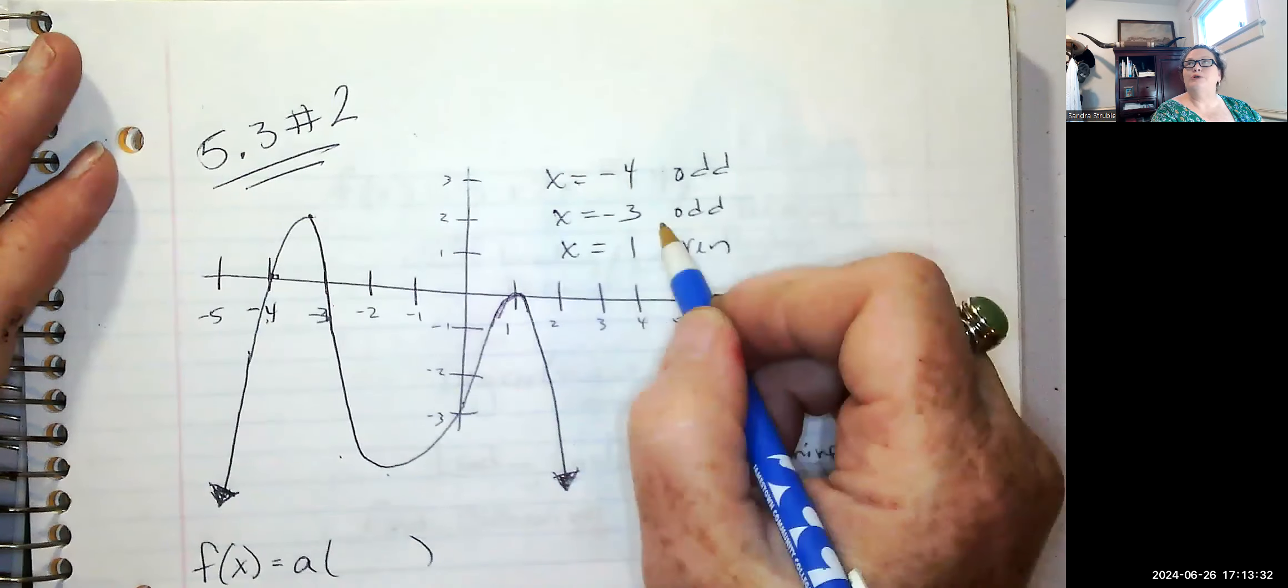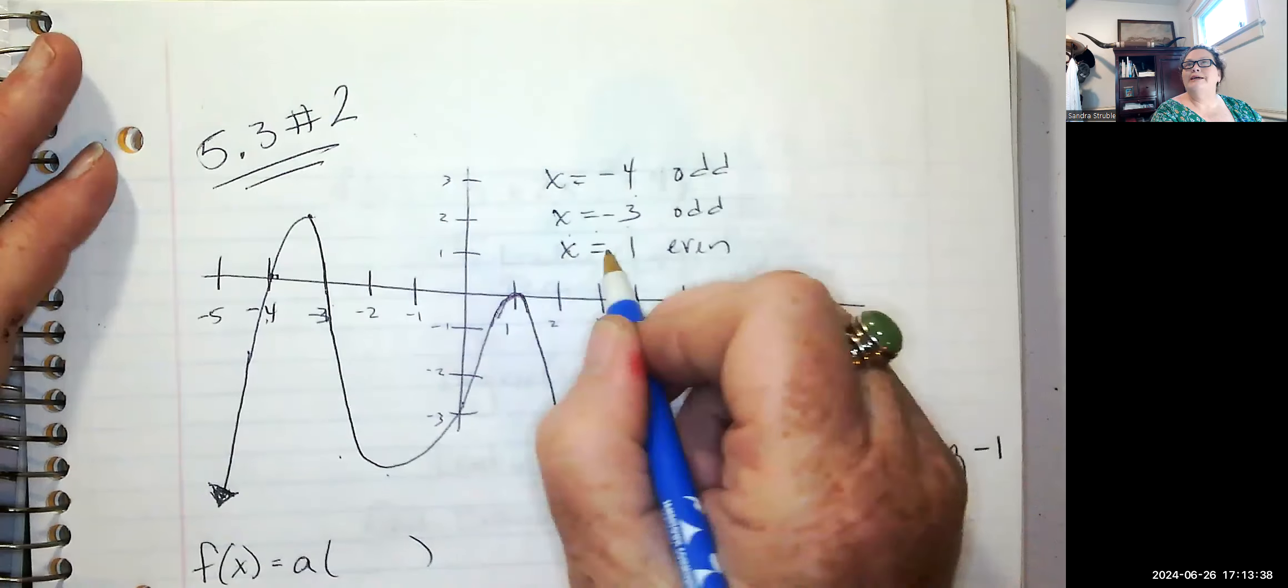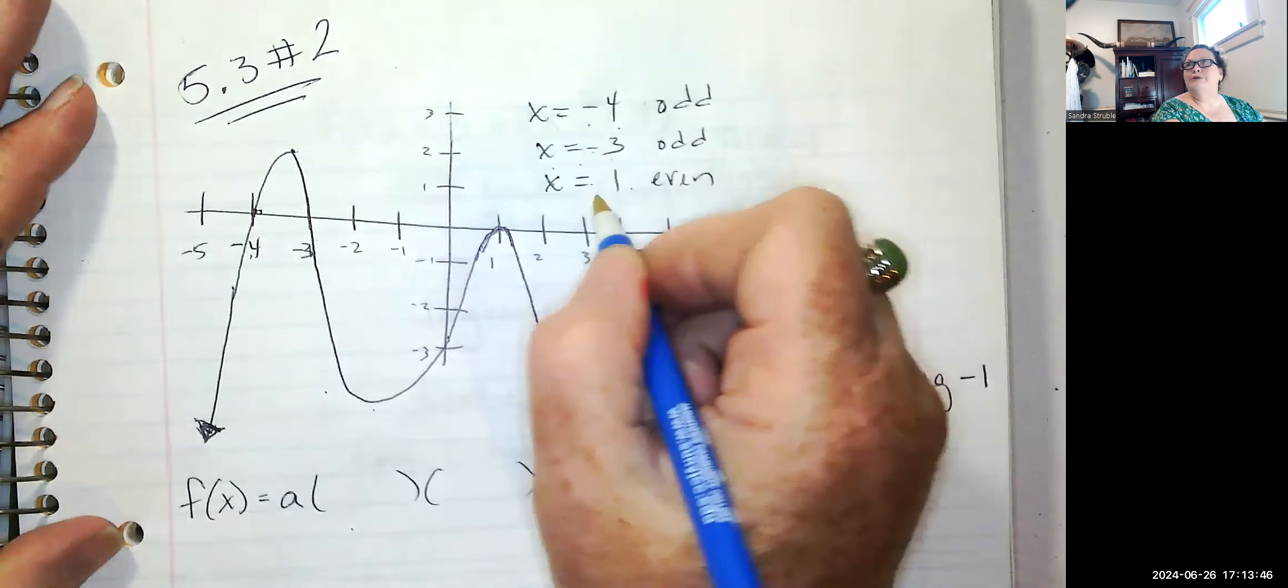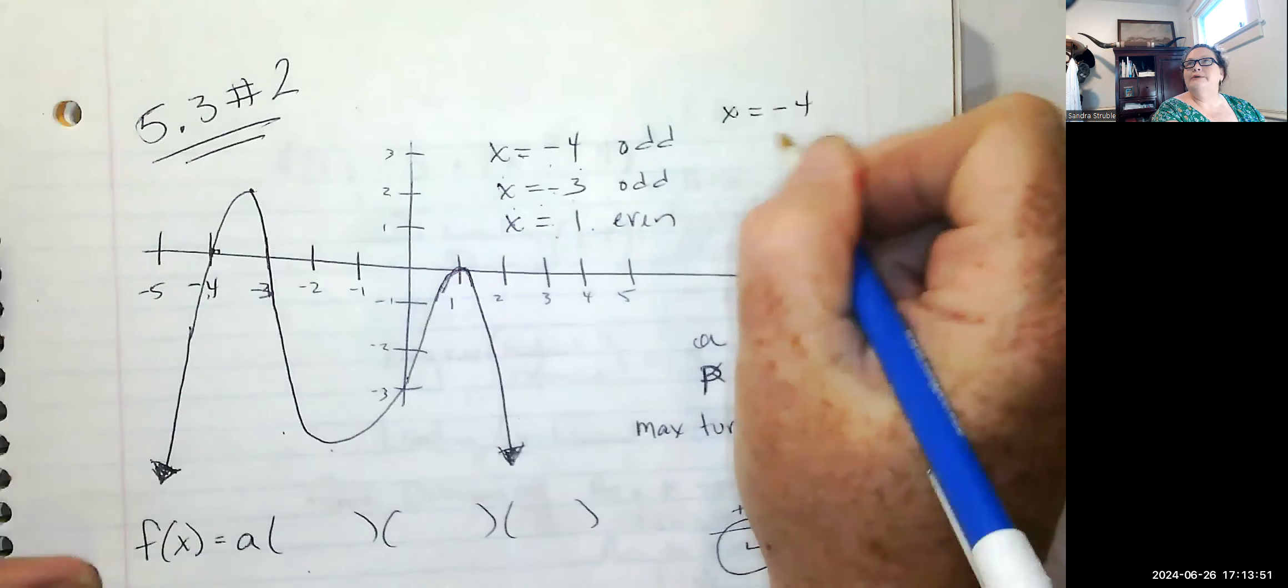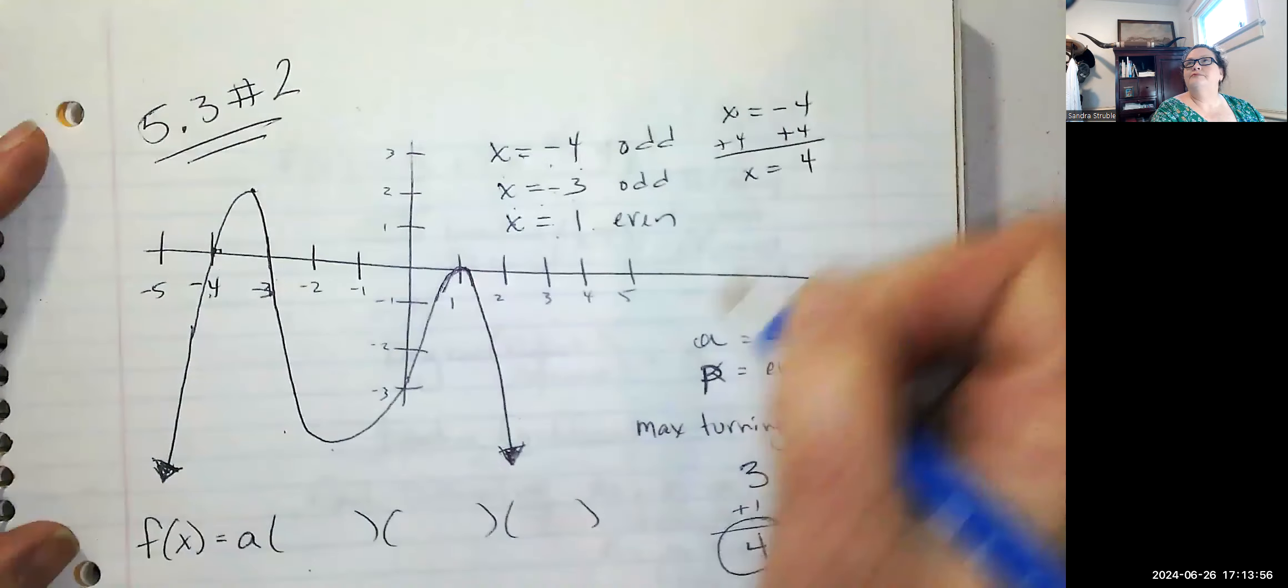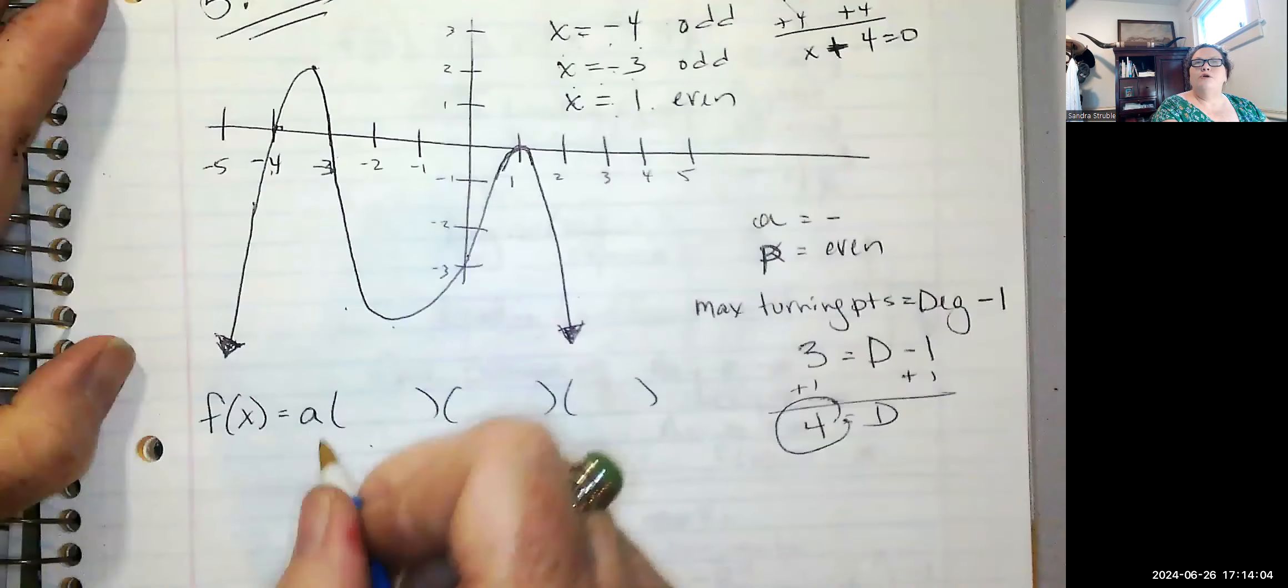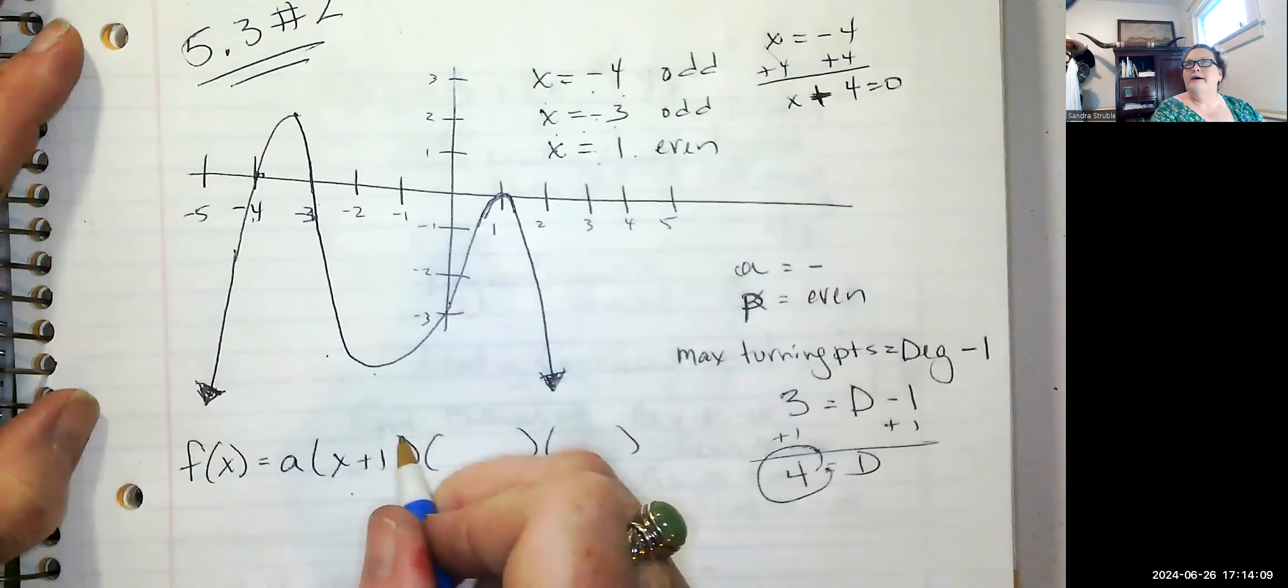Up here, the exponents are at least a one. To change these from X equals negative four and X equals negative three and one to what we need for our parentheses, all you have to do is take them and set them all equal to zero. So take the X equals negative four and set it equal to zero. Add four to both sides. X plus four is equal to zero. So X plus four is one, and it's odd. So we're just going to leave it with a one exponent for the power.